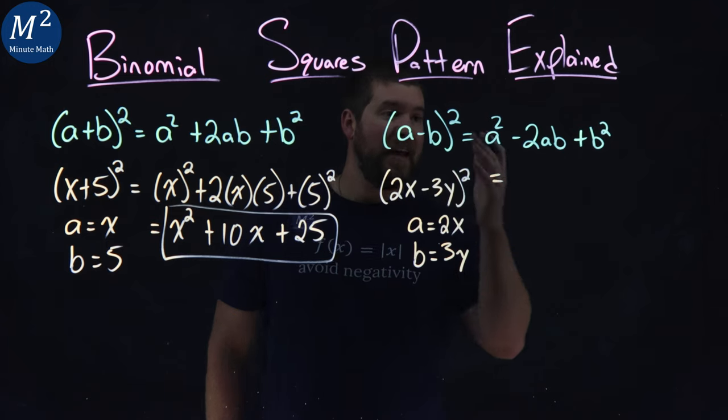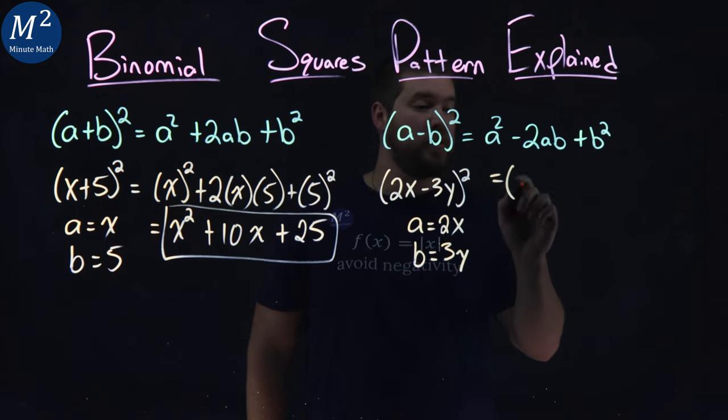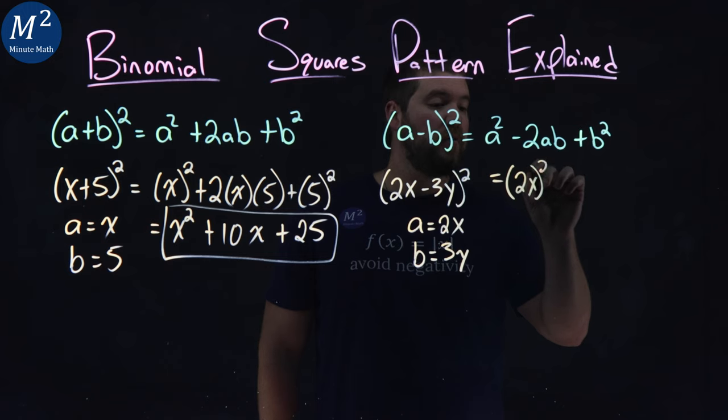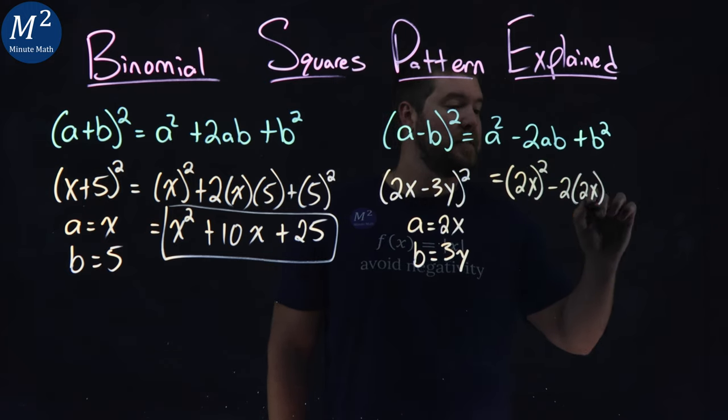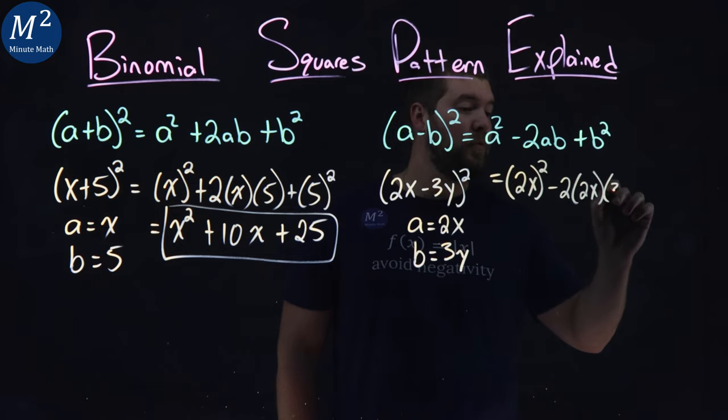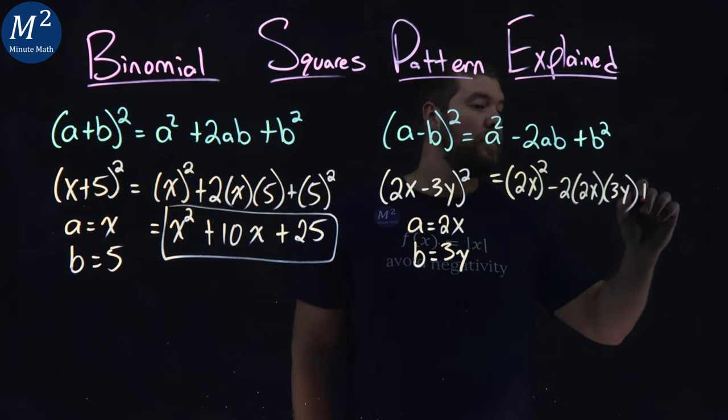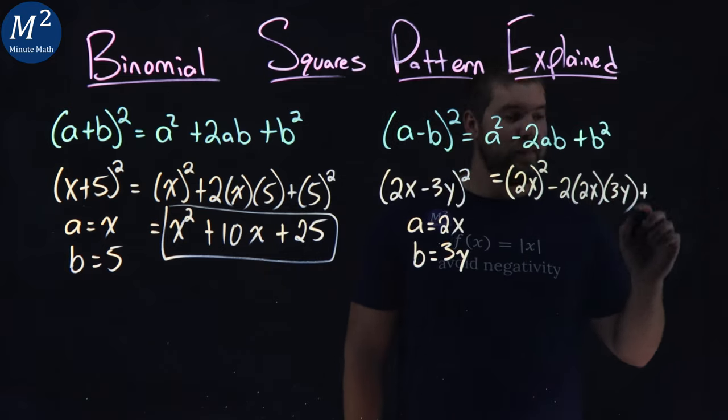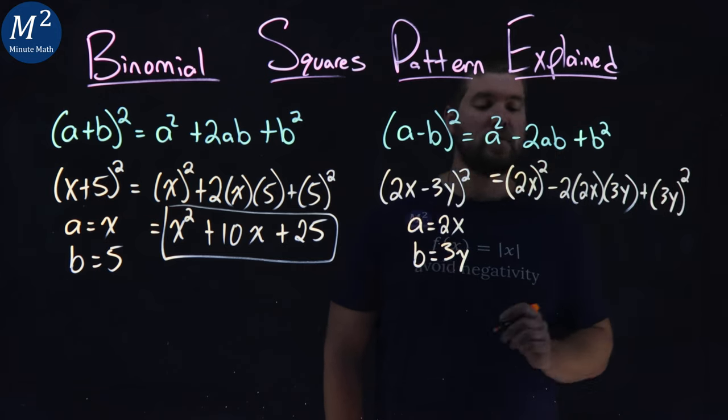Following our pattern here, we have a squared. So our a value is 2x all squared. Minus 2 times a, again, is 2x, times my b value, a positive 3y, plus my last value b squared, which is a 3y all squared.